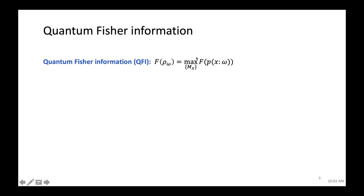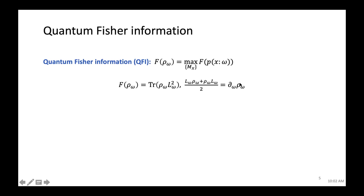To actually compute the QFI, we introduce a new operator L_ω called the symmetric logarithmic derivative (SLD) of ρ. It is any Hermitian matrix satisfying the equation dρ/dω = (ρL + Lρ)/2. We first compute the derivative of the density matrix, solve for L from this equation, and then calculate the QFI.